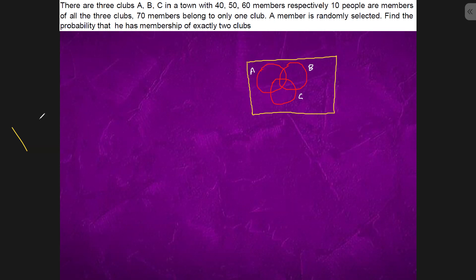Now we are told that there are 40 members in n(A), so n(A) has 40 members. B has similarly 50 members, and C has similarly 60 members. Now 10 people are members of all three clubs, so n(A∩B∩C) is equals to 10.